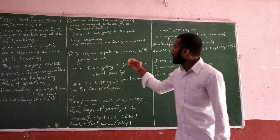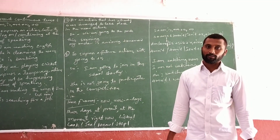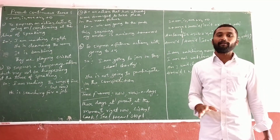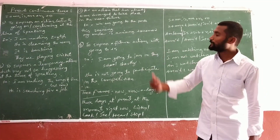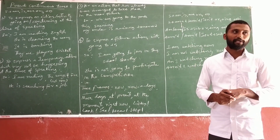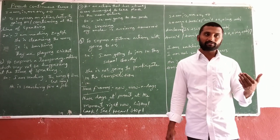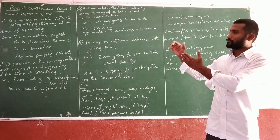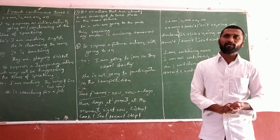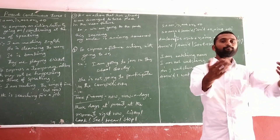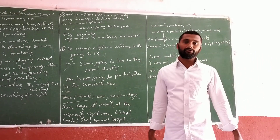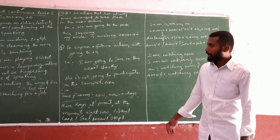'My uncle is arriving tomorrow.' At the time of speaking he is not arriving, but he will arrive by tomorrow — it is a planned future. We often use this kind of expression regarding trains, aeroplanes, and buses when we are on a journey. Actions which are very near to the future can use present continuous tense.